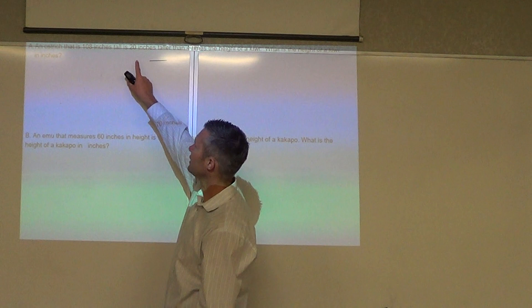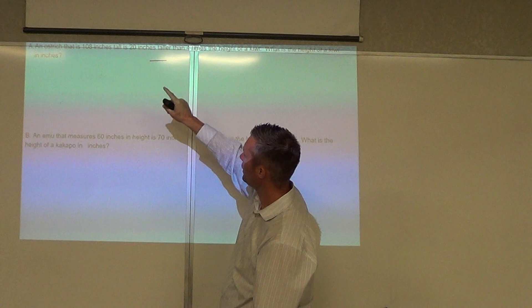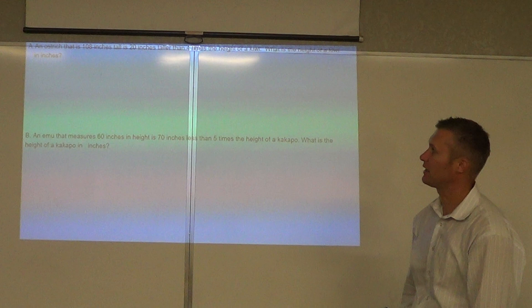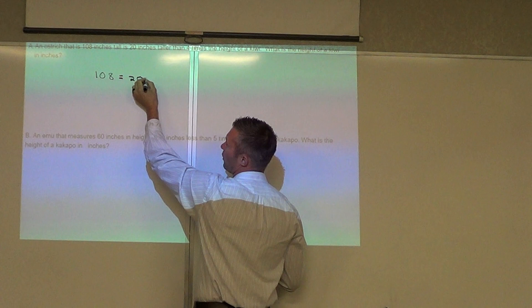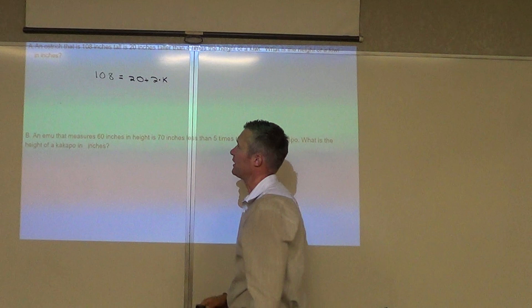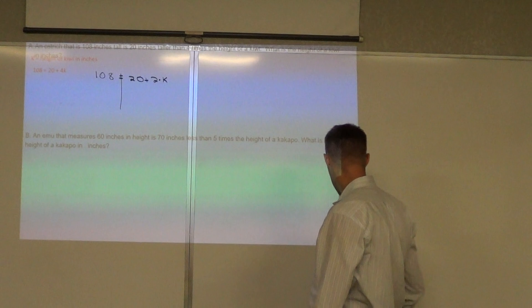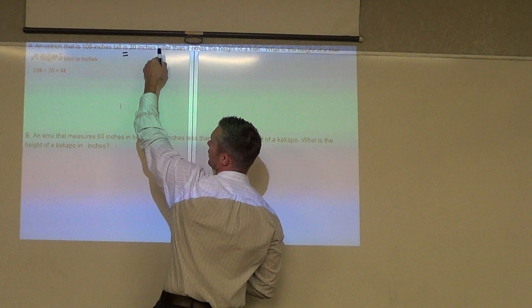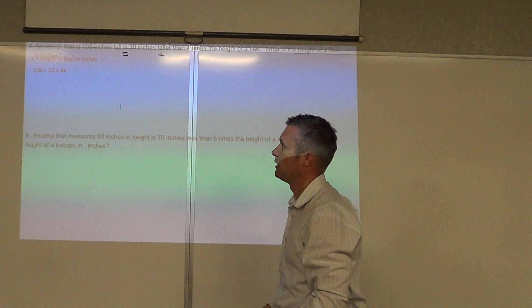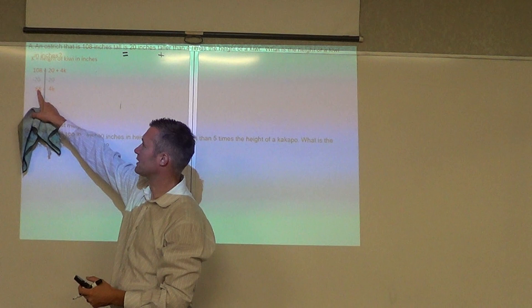An ostrich that is 108 inches tall is 20 inches taller than two times the height of the kiwi. So you have 108 inches. When it says is, that means equal. Is 20 inches taller, that would be more, than two times the height of the kiwi. And now we have an equation. Now you draw your line and you would solve from there. Anytime you see the word is, is equal to. More or taller than, that would be an addition. And then you say times, that would be a multiplication. Draw your line, subtract 20 on both sides. 108 minus 20 is 88. Divide by 4.